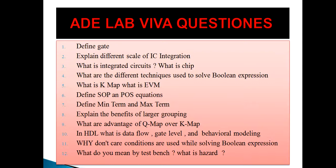What is Kmap and what is EVM? Kmap is the visual representation of SOP and POS — sum of product and product of sum. EVM is an alternative to the Kmap. EVM stands for Entered Variable Map, where one of the variables is expressed inside the map itself — that is why it is called the entered variable map.